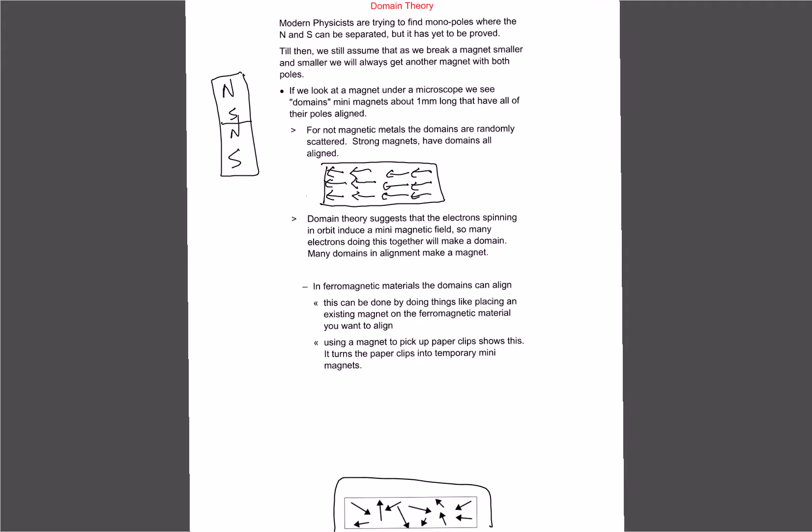The theory itself suggests that the reason these domains occur is because the electrons are spinning in orbit around the nucleuses. You have a whole bunch of these electrons spinning, they're basically inducing a mini magnetic field. A whole bunch of electrons working together, we get a magnetic field to create, and if you have a whole bunch of those you get a little domain. If you have a bunch of domains in alignment, we end up getting a metallic object that is a magnet.